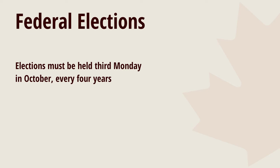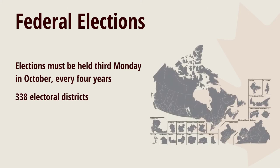Canada is now divided into 338 electoral districts — please note the change from your guide where it says 308, as this is one of those updates. Electoral districts are geographic areas all across Canada, and one MP represents each area in the House of Commons in Ottawa.